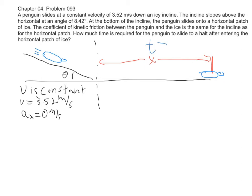The main question is: what is the time T? How long does it take him to go from point A to point B? In order to figure that out, since we want time, I immediately think equation of motion. We know the initial velocity at point A is 3.52 meters per second. Our final velocity at point B, since he comes to rest, is 0 meters per second.